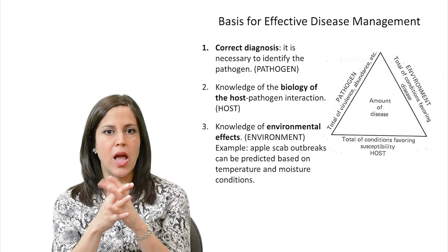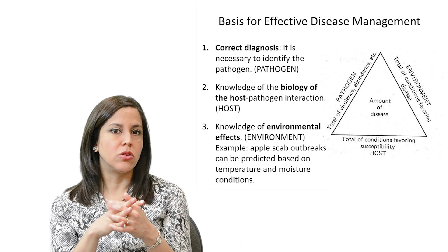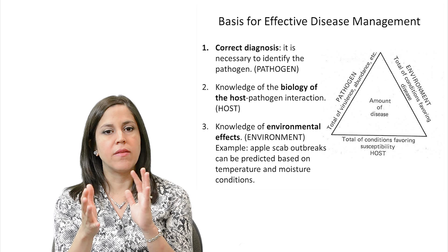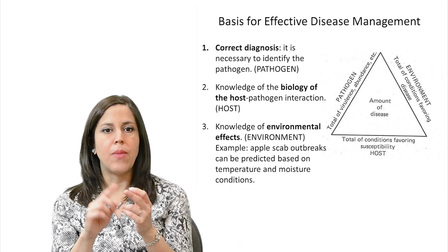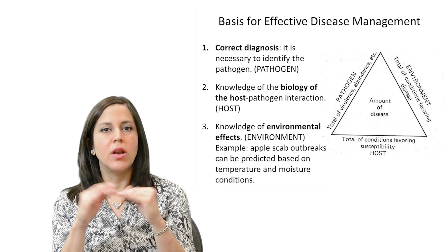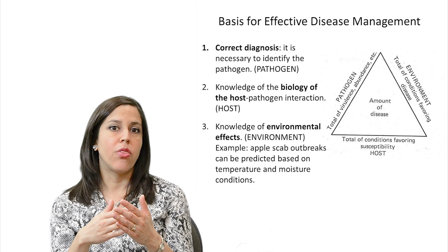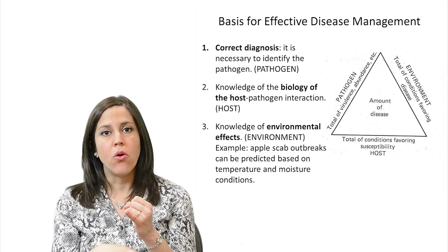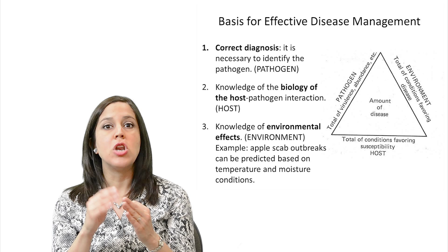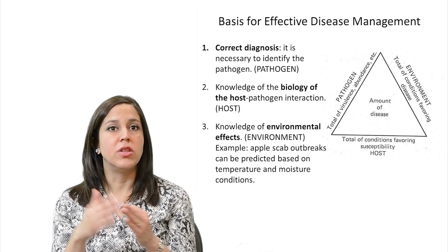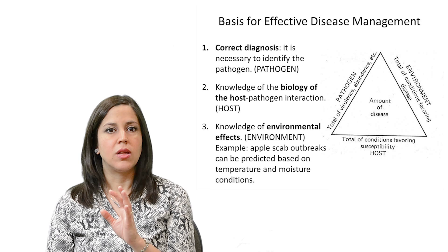We also want to know the environmental aspects — looking at the environment side of the disease triangle. For example, apple scab outbreaks can be predicted based on temperature and moisture conditions. If you know certain environmental conditions such as rainfall, high moisture, or cool temperatures are conducive to disease, you should prepare for the arrival of the disease and try to control it before it becomes a huge epidemic.